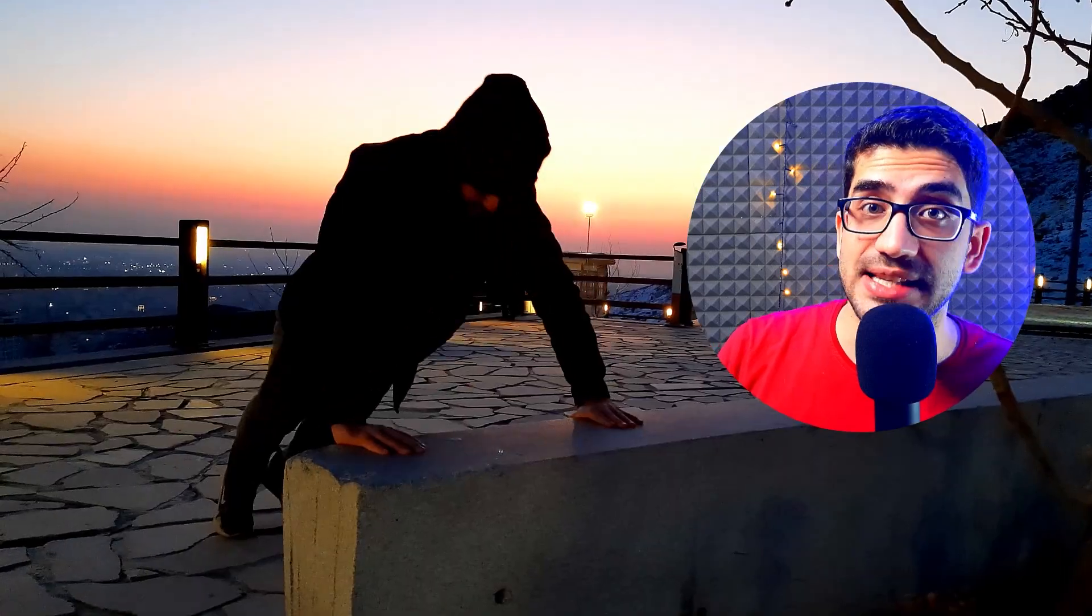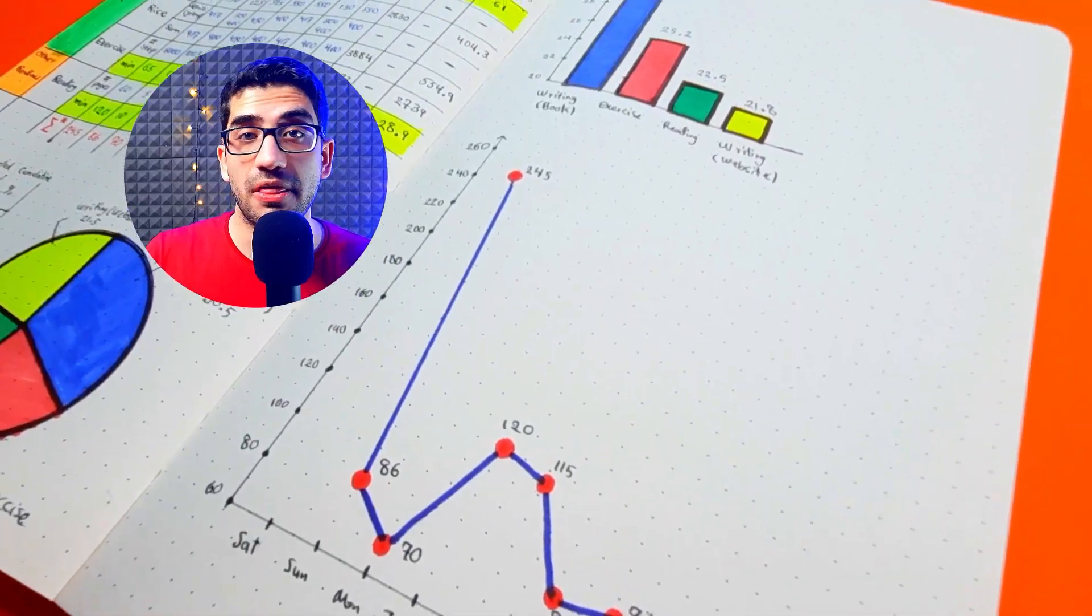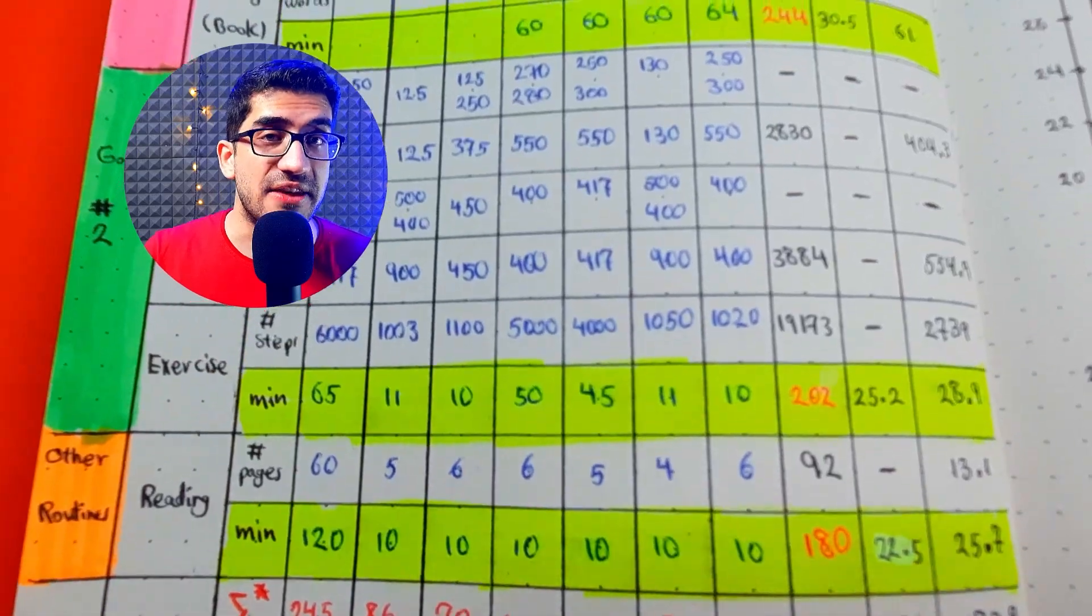The fourth quadrant is daily habits and routines, such as reading, learning a new language, exercising, and so on. But you shouldn't fill this quadrant now, and you will see why in the following steps.